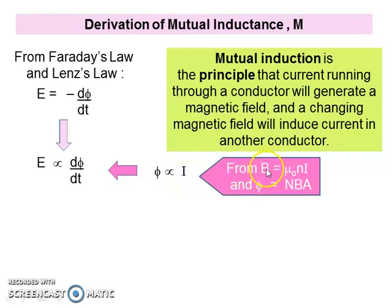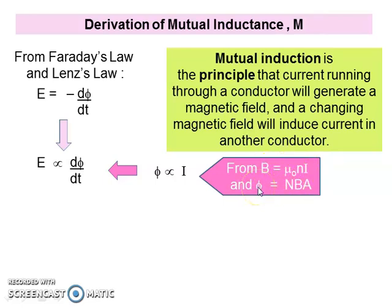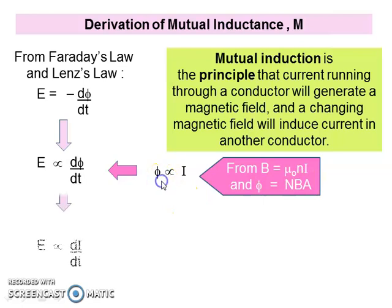From the previous lesson, B equals μ₀ni and magnetic flux ψ equals NBA. So if i is directly proportional to B, and B is also directly proportional to ψ (magnetic flux), where μ₀ is the permeability, n is the number of turns density, N is number of turns, and A is a constant — substituting i into ψ, we have E directly proportional to di/dt.